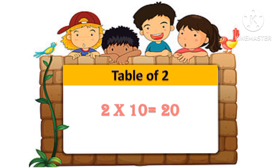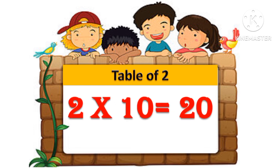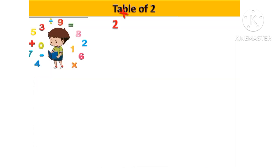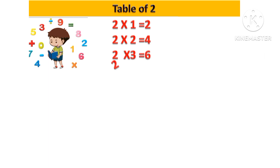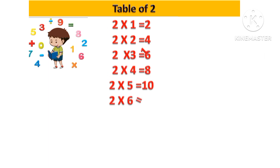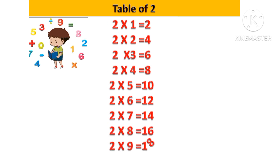2 ten's are 20. Let's revise: 2 one's are 2, 2 two's are 4, 2 three's are 6, 2 four's are 8, 2 five's are 10, 2 six's are 12, 2 seven's are 14, 2 eight's are 16, 2 nine's are 18, 2 ten's are 20.